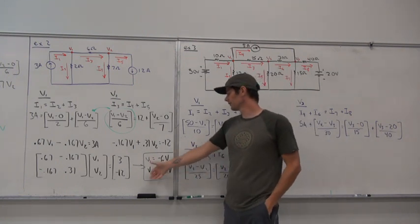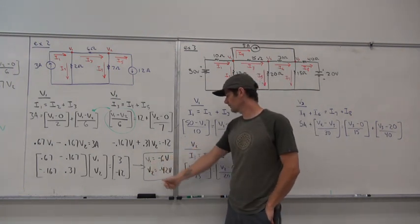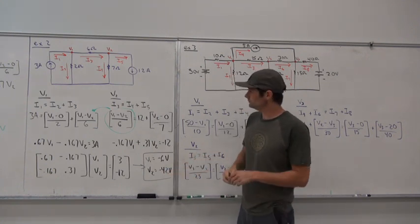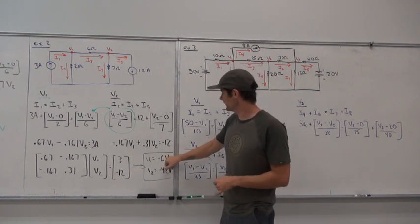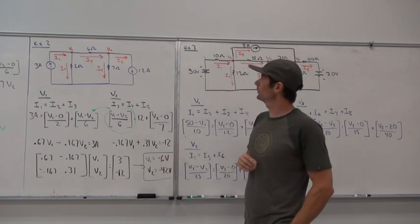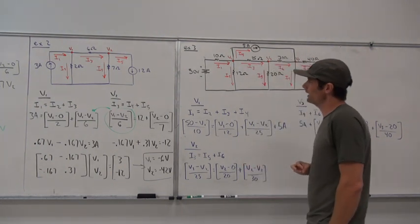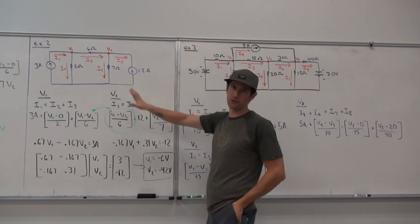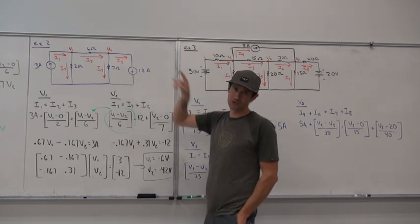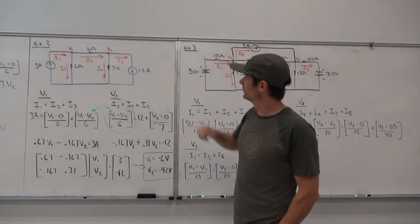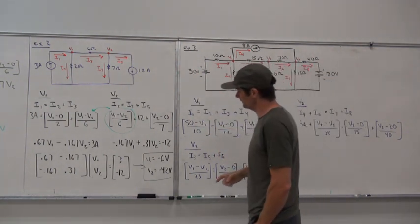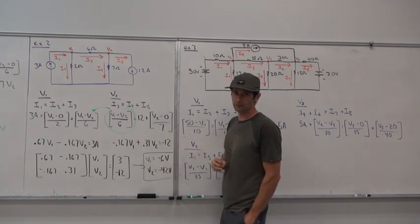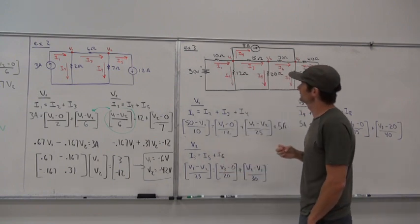The negative values for V1 and V2 make sense — the twelve-amp source driving current toward ground is going to produce negative node voltages relative to our assumptions. This just means the assumed current directions are opposite, and we'd need to go back and revise if we wanted accurate directional labeling.